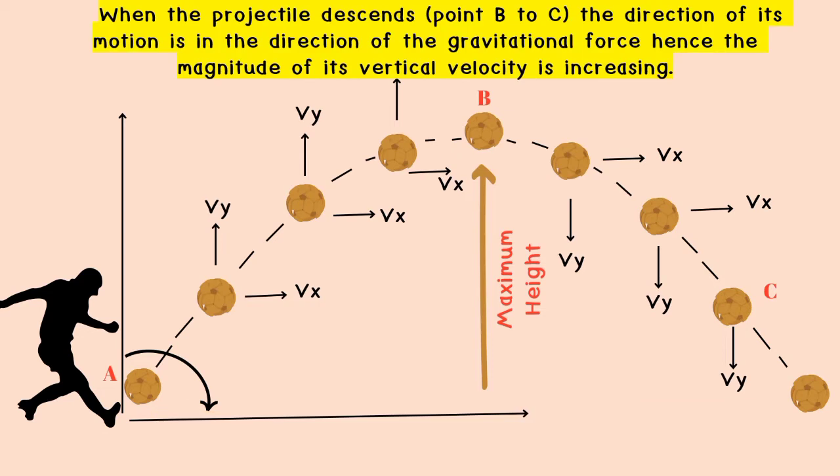When the projectile descends from point B to point C, the direction of its motion is in the direction of the gravitational force. Hence, the magnitude of its vertical velocity is increasing.